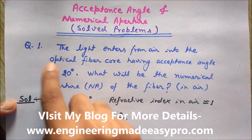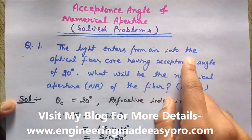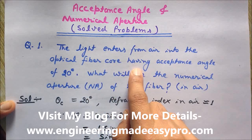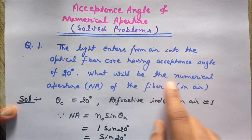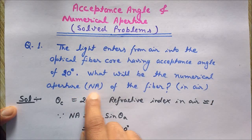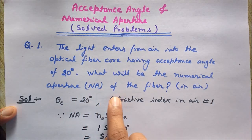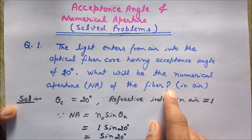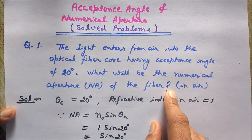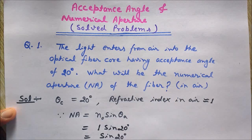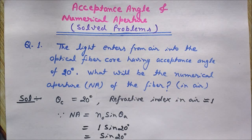The light enters from air into the optical fiber core having acceptance angle of 20 degrees. What will be the numerical aperture (NA) of the fiber? So here it is saying that the acceptance angle of the optical fiber is 20 degrees and I want to calculate the numerical aperture from this acceptance angle.